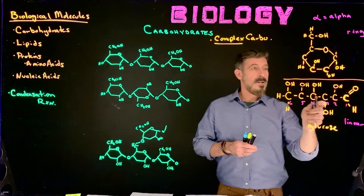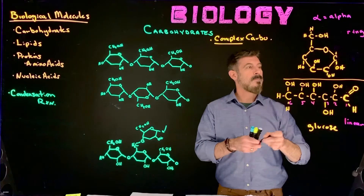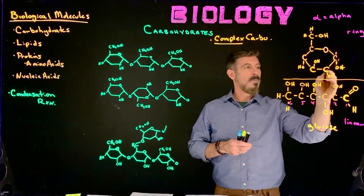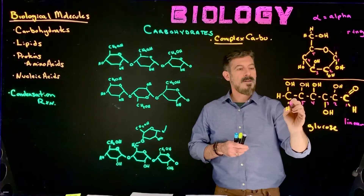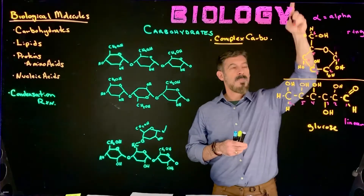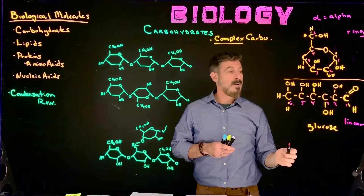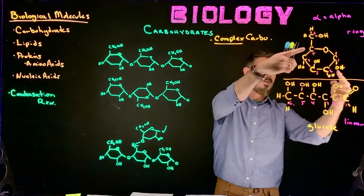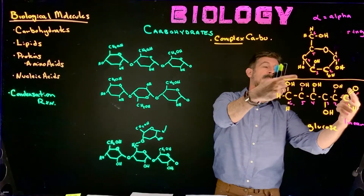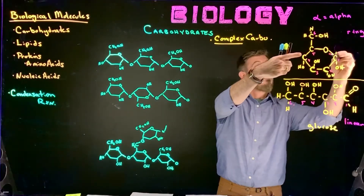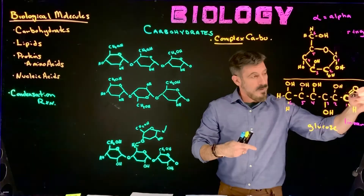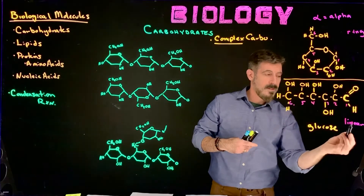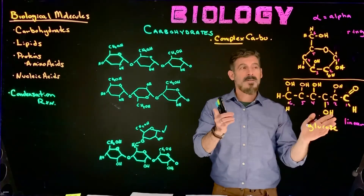What happens here is there's a fold. This linear glucose folds - carbon 1, 2, 3, 4, 5 come into the ring, and carbon number 6 is actually put up out of the ring. Carbon 1 and 5 come together, and then the oxygens between them form a bond, and then we get the carbon-oxygen double bond flipping around and forming an OH group that sticks off the end. That's the characteristic structure.